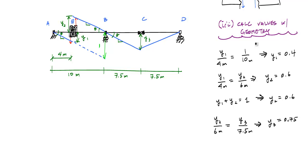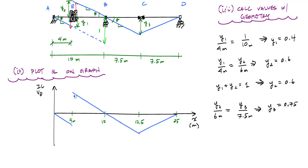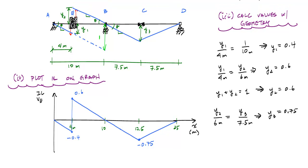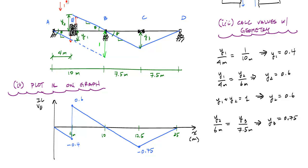So now I want to re-plot the influence line in a nice clean graph. And this plot is the influence line for the internal shear at E for a concentrated load pointing downwards, moving across the beam.